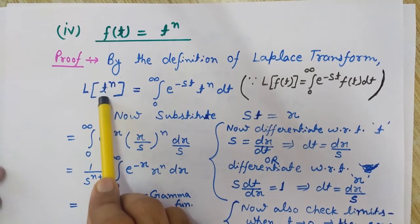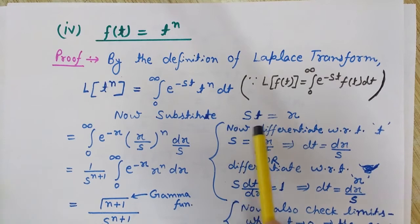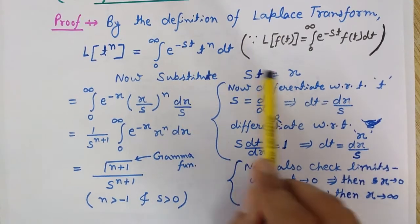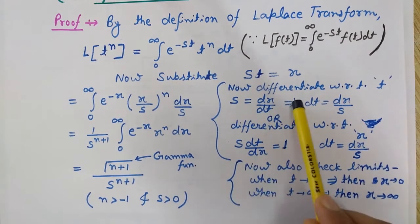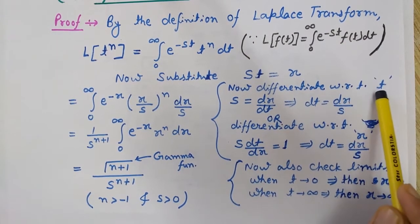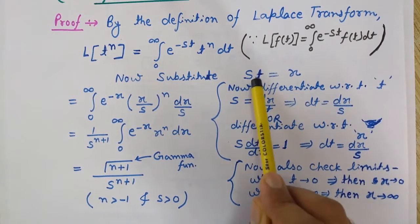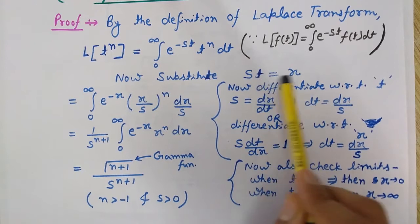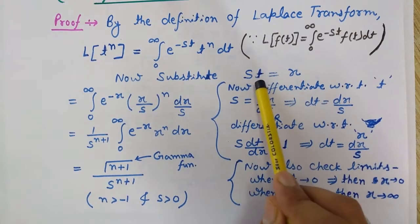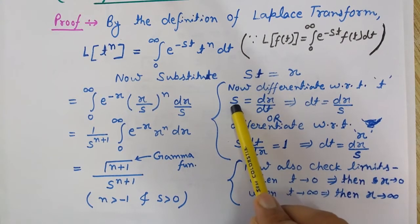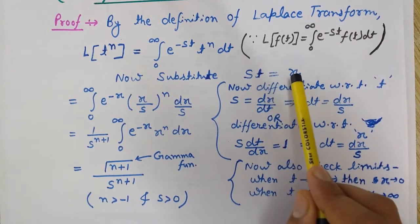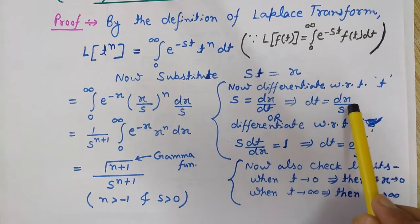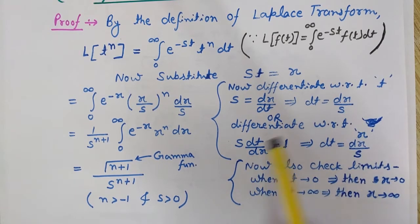Now we will substitute st with x. So let x equals st. I differentiate with respect to t and I get s equals dx/dt, since t and x are variables. From this I get dt equals dx/s.